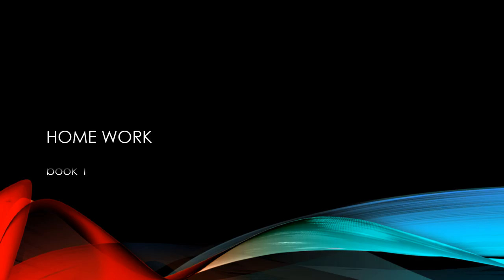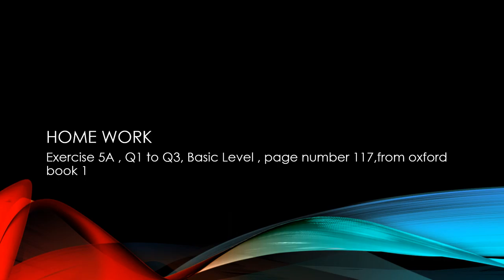Now homework is exercise 5a, question number 1, 2, question number 3, all the parts. This is the basic level. Page number 117 from the Oxford book 1. Do in your algebra copy with rough column. Page number 117 from the Oxford book 1.